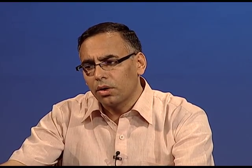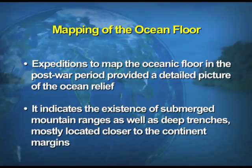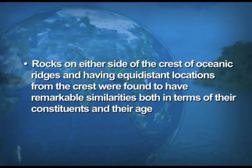Later, expeditions to map the ocean floor in the post-war period provided a detailed picture of the oceanic relief, indicating the existence of submerged mountain ranges and trenches — mid-oceanic ridges in the ocean floor. These provided enormous information about the topography of the ocean. Dating of the rocks from the oceanic crust revealed that oceanic rocks were much younger in age compared to the continental rocks.